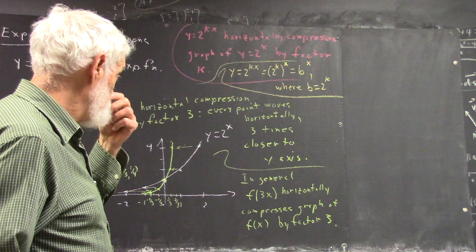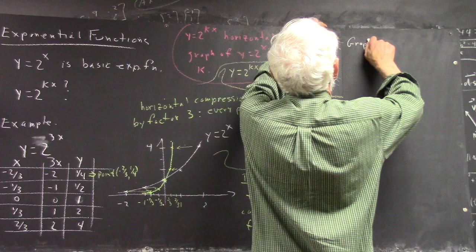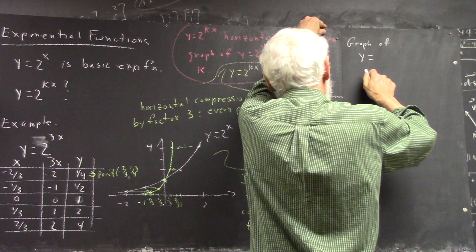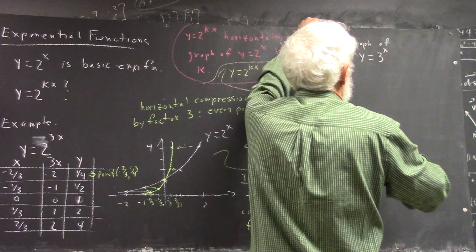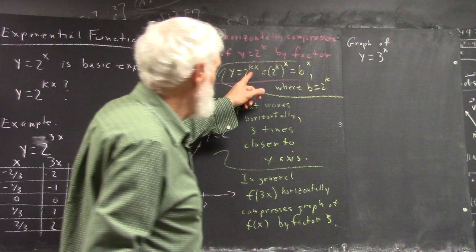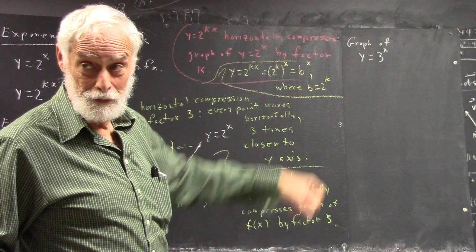So let's talk about the graph of y equals... Oh, what the heck. Let's take, let's say, 3 to the x. Now, I want to find out what kind of a k I'd have to put on 2 to the x in order to make the graph of 3 to the x.